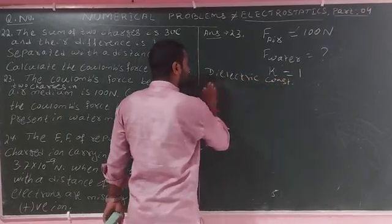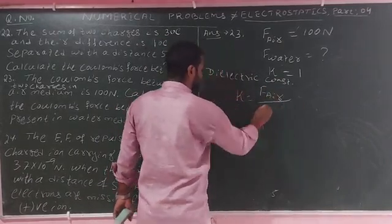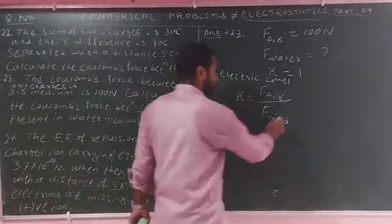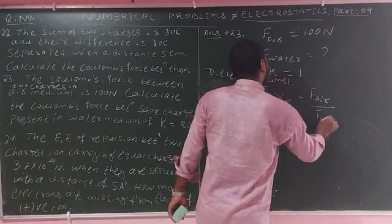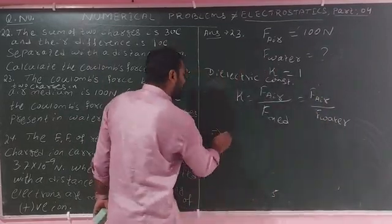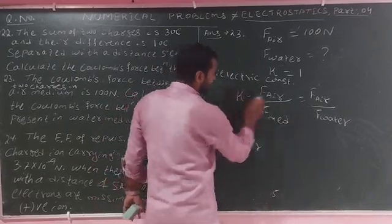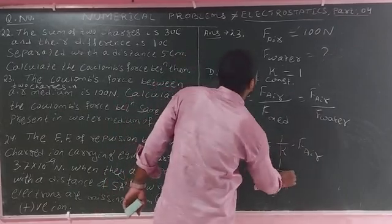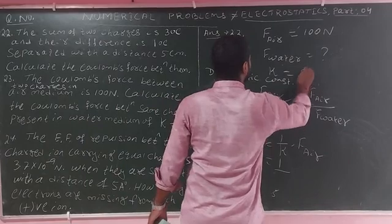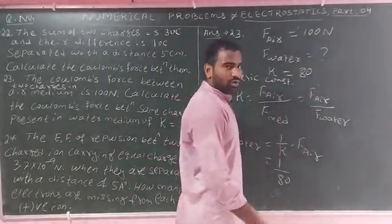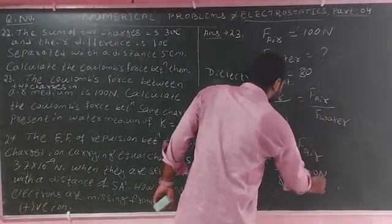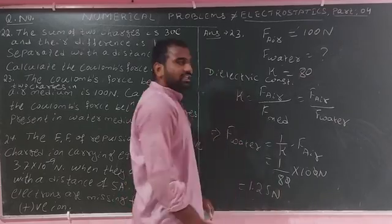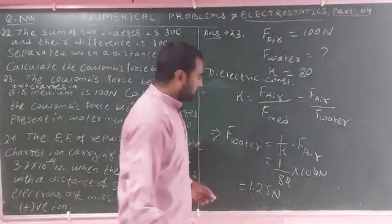The dielectric constant formula is: K equals force between two charges in air medium divided by force between same charges in any other medium. So F_water equals F_air divided by K. With K equals 80 and F_air equals 100 N: F_water equals 100 divided by 80, which equals 1.25 newtons.